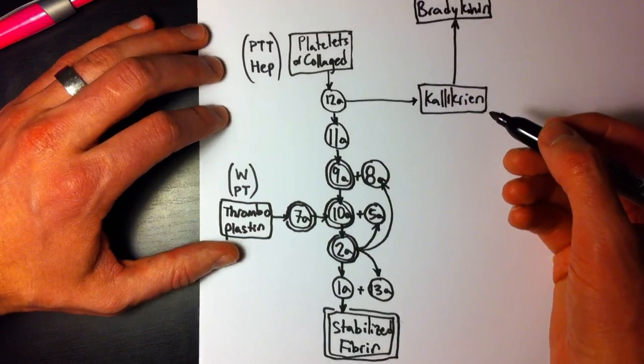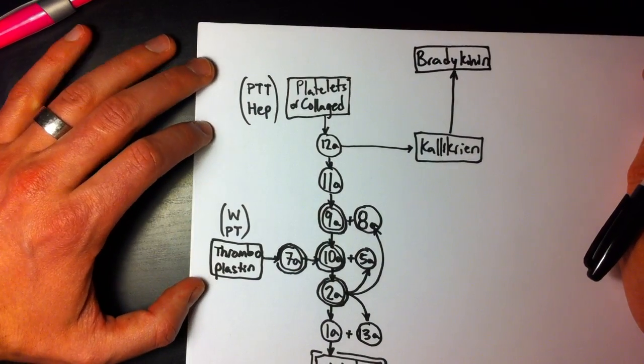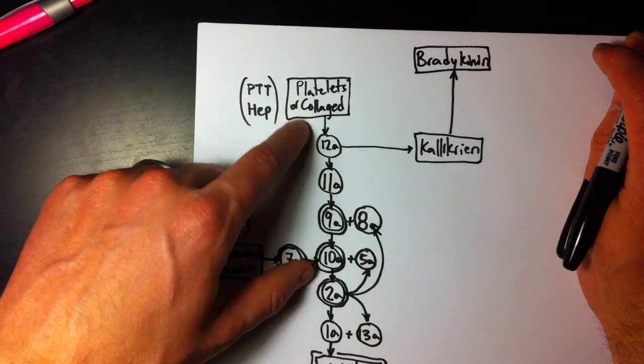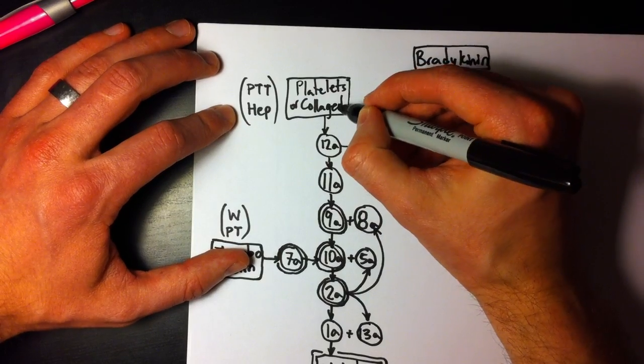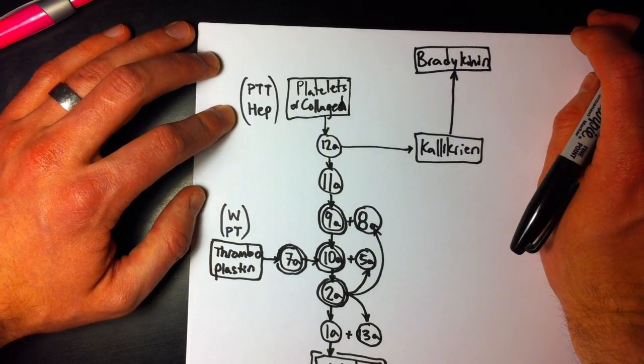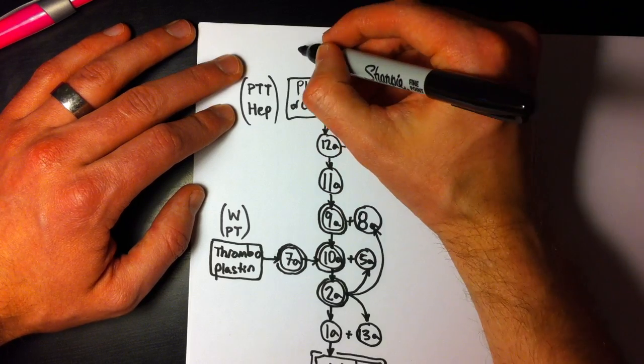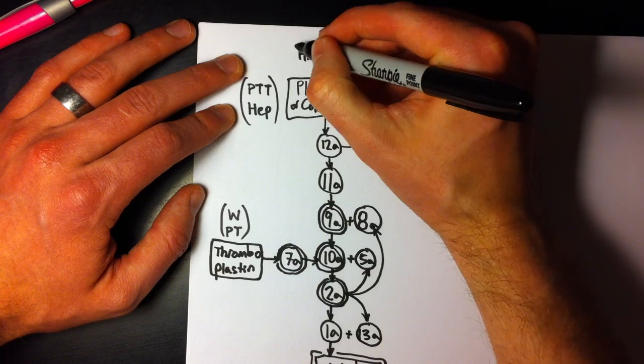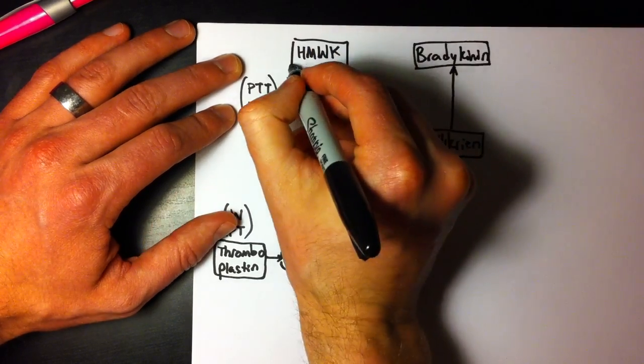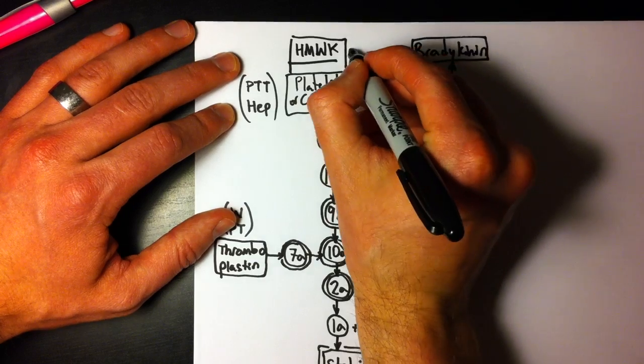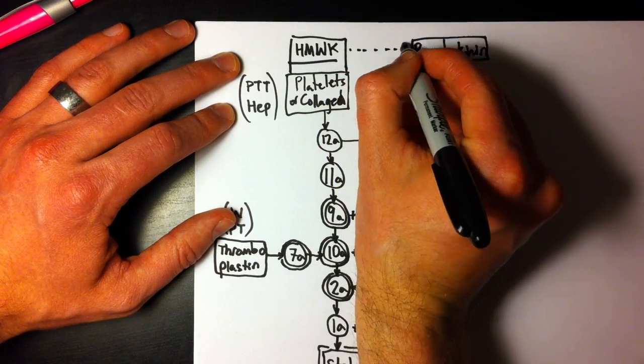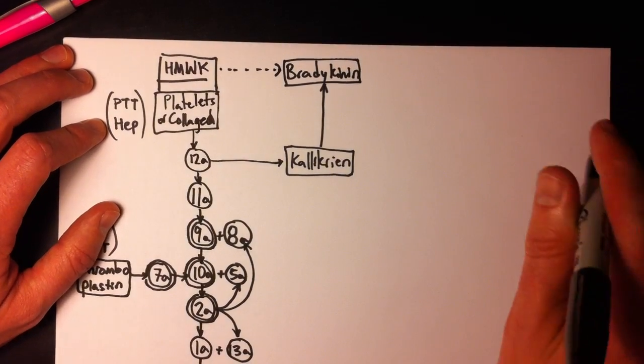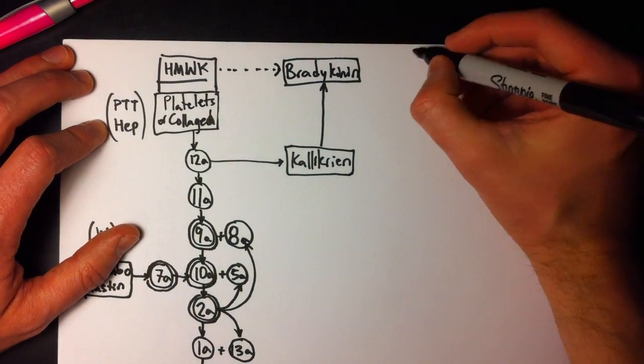One of those is that it can activate bradykinin. And so we're just going to show this, that that's what's coming from there. Now I'm going to add another little thing back into the top of the intrinsic pathway. Because the intrinsic pathway, besides platelets and collagen, can be stimulated by high molecular weight kinase. We'll just add this onto here, its own little thing. And bradykinin actually comes from high molecular weight kinase.